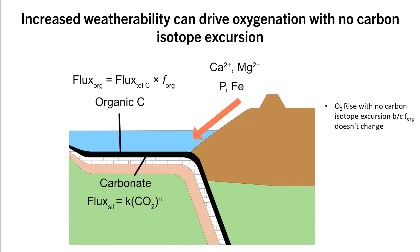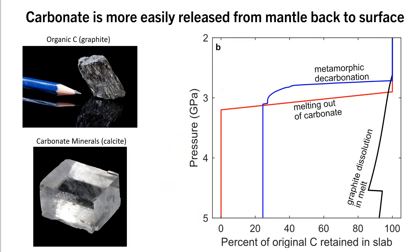Subsequently, organic carbon and carbonate are buried on the seafloor and subducted deep into the mantle, which is where we propose the carbon isotope excursion originates. So after being subjected to the elevated temperatures in the mantle, organic carbon will metamorphose to graphite. This figure on the right shows how much of the originally subducted organic carbon will remain in the subducting slab as a function of pressure, which can be thought of as how deep the slab has been subducted into the mantle.